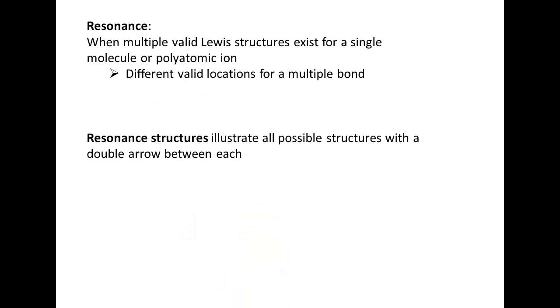So our next topic is resonance. And this is when you have multiple valid Lewis structures that exist for a single molecule with the same skeletal structure. So they're not isomers. They have the same order and structure. However, you have multiple bonds that can move. So resonance structures illustrate all possible structures. So what a resonance structure is, is you're actually going to draw each possible structure with a double arrow between them.